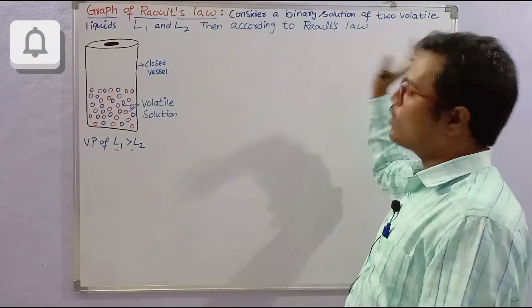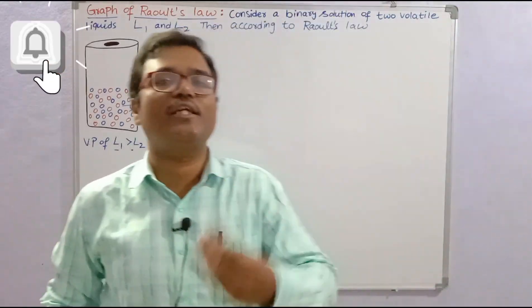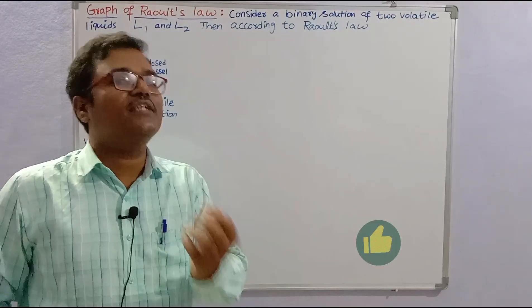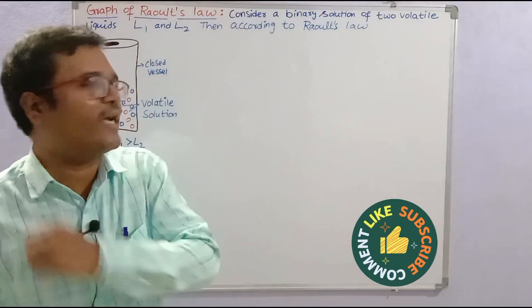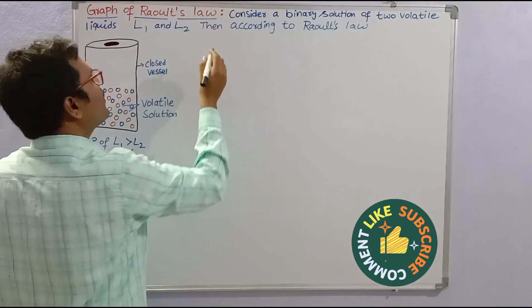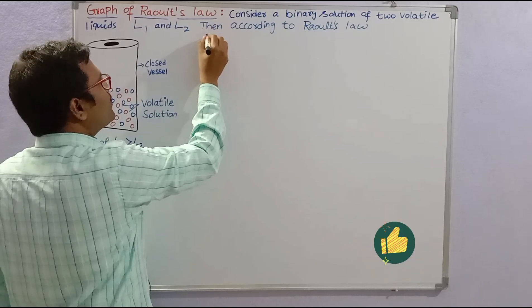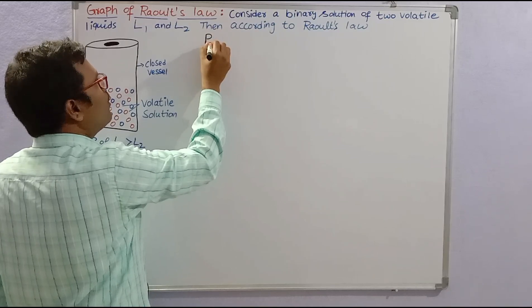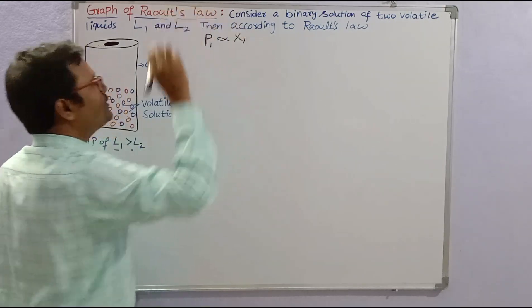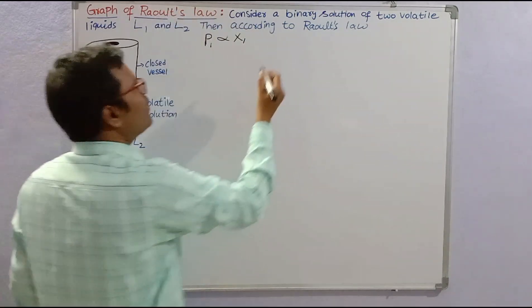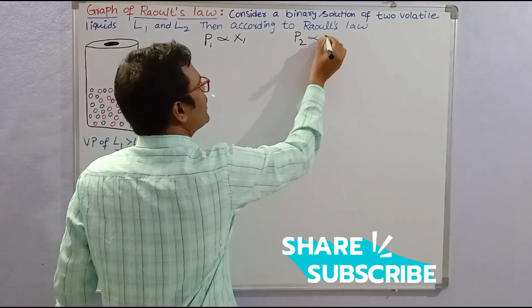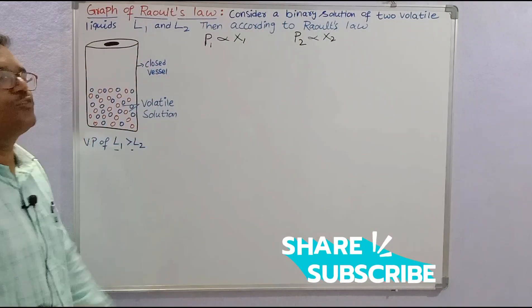According to Raoult's law, the partial vapour pressure of any component present in the volatile liquid is directly proportional to its mole fraction. So the partial vapour pressure of liquid 1 is directly proportional to x1, that is its mole fraction. Similarly, the partial vapour pressure of liquid 2 is also directly proportional to its mole fraction x2.